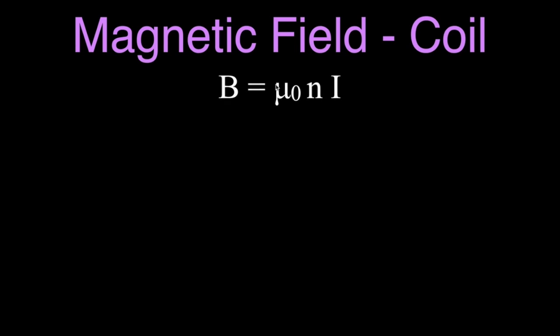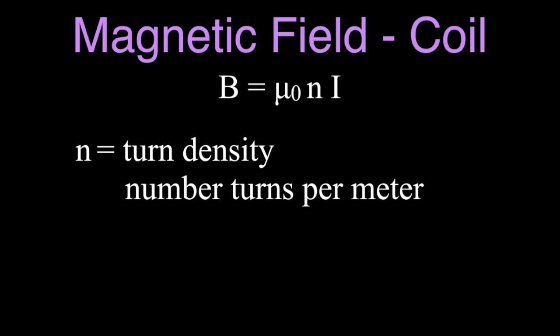The third form of the equation looks basically the same — B, μ₀, and I for current — but now uses lowercase n instead of uppercase N. Lowercase n is the turn density, which is the number of turns per meter. You calculate it by taking the number of turns (capital N) and dividing by the length L in meters. So if you substitute that back in, you get the same equation as before. You can use this form as-is, or add μᵣ if there's something in the core of the coil. All three equations are the same equation — just different forms for different circumstances.